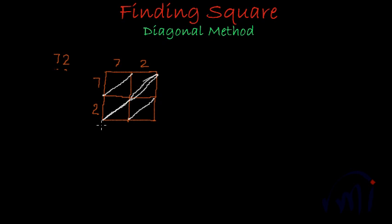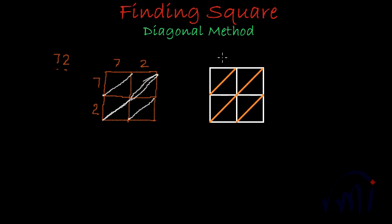If I draw it neatly it will look something like this. Here we have seven and here we have two, here we have seven and then here we have two. 72 is the number for which we are trying to find the square.